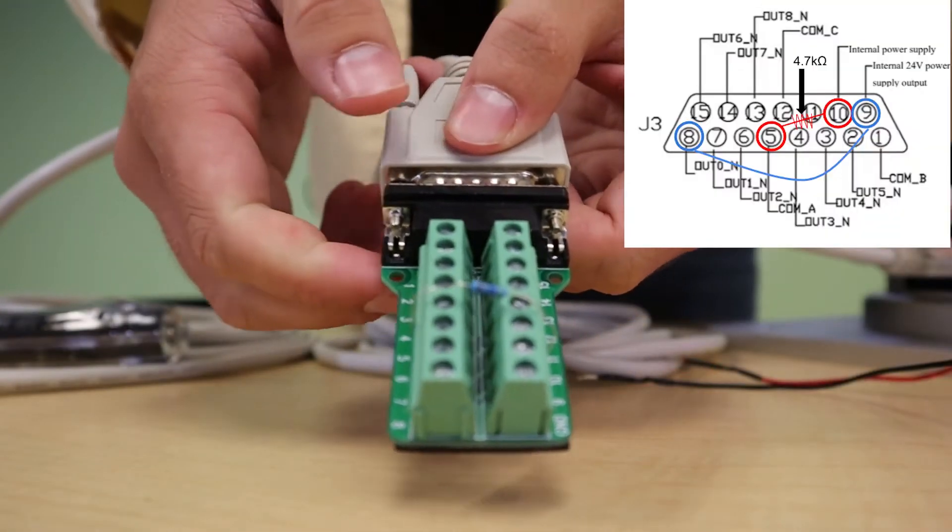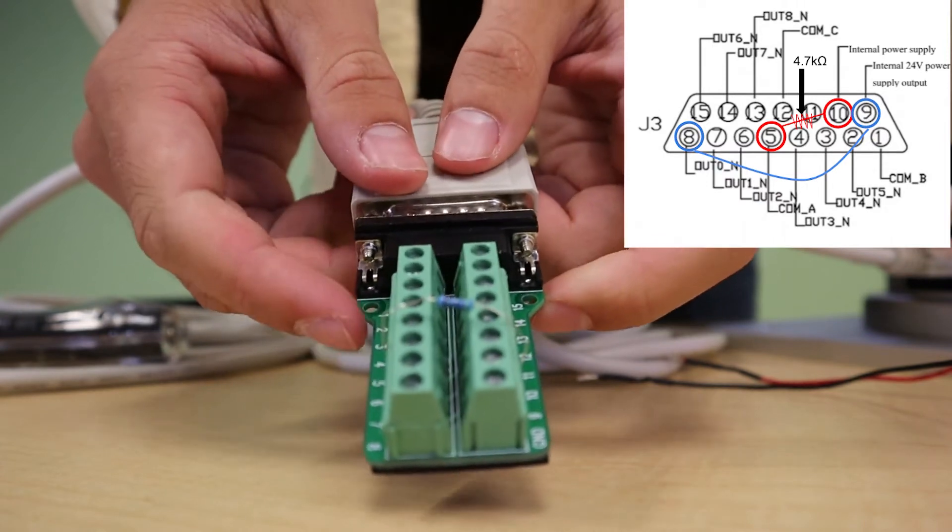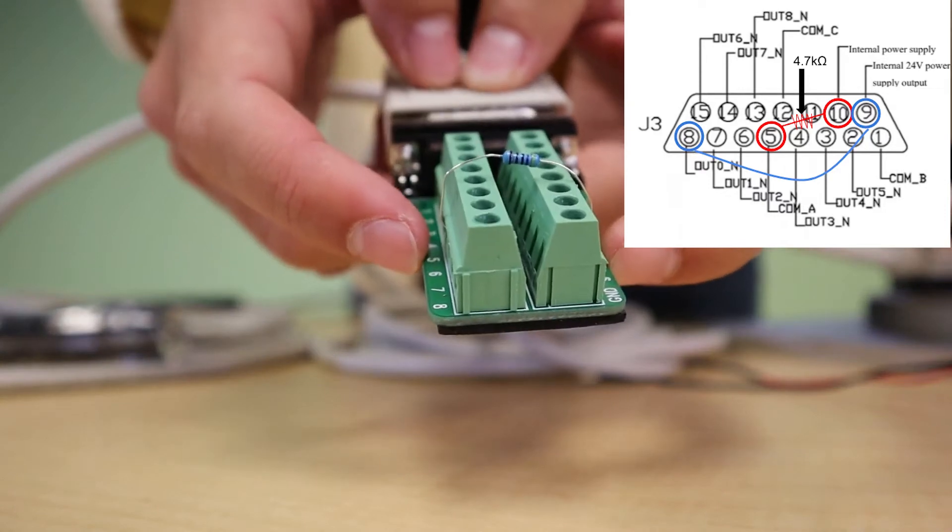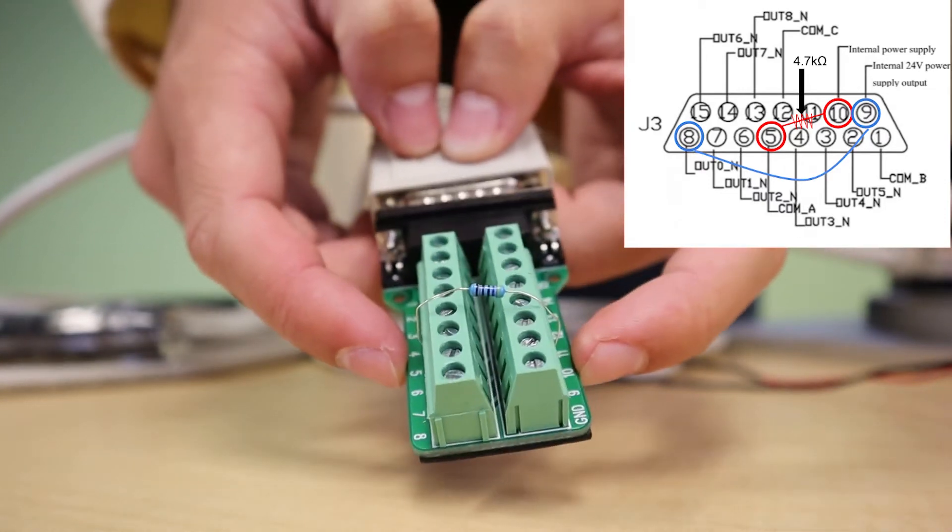In order to use the outputs you have to connect a 4.7k resistor between pin 10 and the COM port for the set of three outputs that you're using.